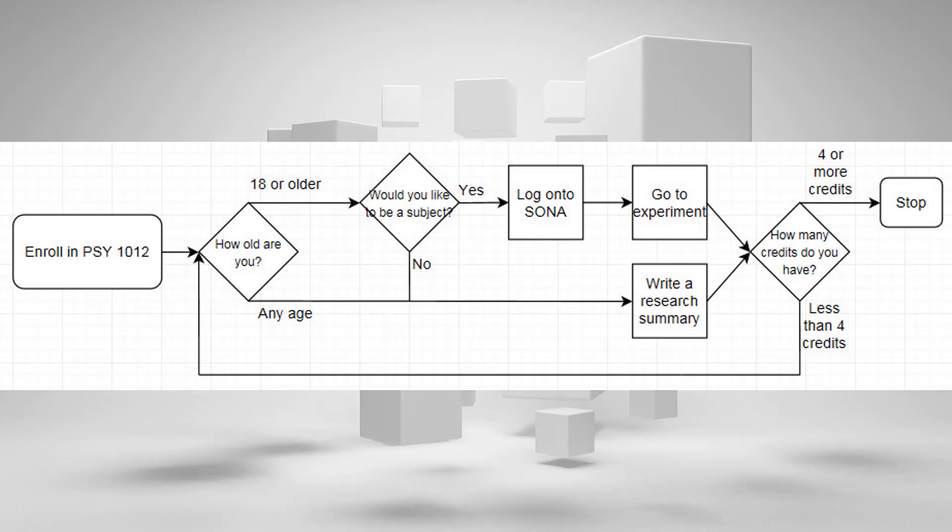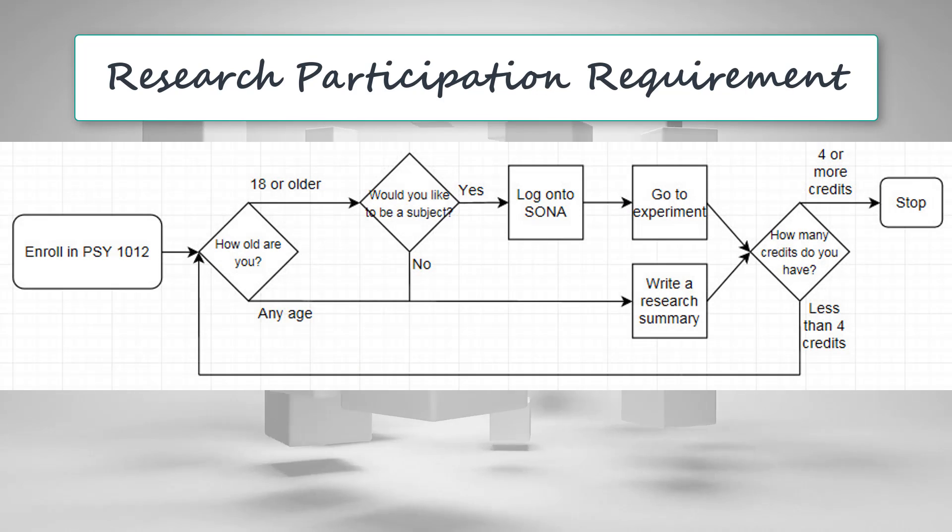After joining the general psychology course, the research participation requirement must be fulfilled by all students. To fulfill the research participation requirement, the first question you have to answer is your age. If you are 18 years of age or older, you qualify to be a subject in an experiment. You can choose to either participate in experiments or opt out.